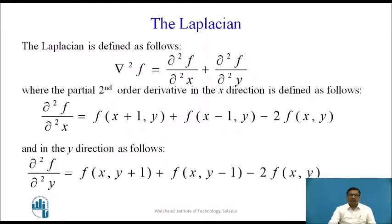The second-order partial derivative in the x direction is: ∂²f/∂x² = f(x+1, y) + f(x−1, y) − 2·f(x,y), where f(x,y) is the current pixel, f(x−1, y) is the previous pixel, and f(x+1, y) is the next pixel in the x direction. Similarly, in the y direction: ∂²f/∂y² = f(x, y+1) + f(x, y−1) − 2·f(x,y).